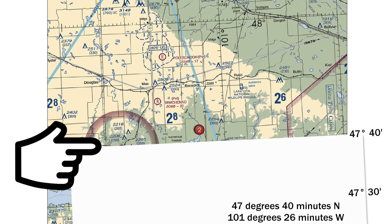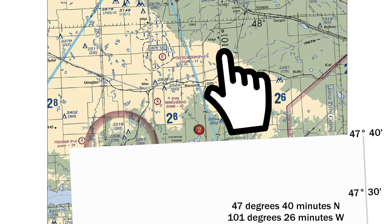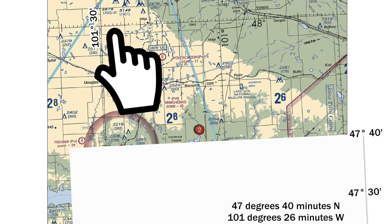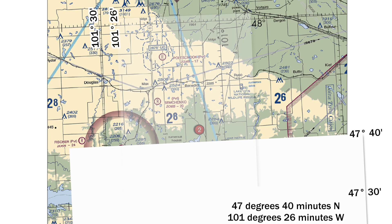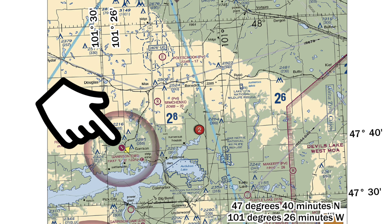Put your piece of paper on the 47 degrees 40 minutes line to mark your latitude. Now find longitude — 101 degrees 26 minutes. The 101-degree line is marked on the chart; the next big longitude line to the west is 101 degrees 30 minutes, which is almost 26 minutes. We subtract four tick marks, moving four marks closer to 101 degrees. Where those two lines intersect, that's the airport we're looking for — the only airport in this area is Garrison Airport.